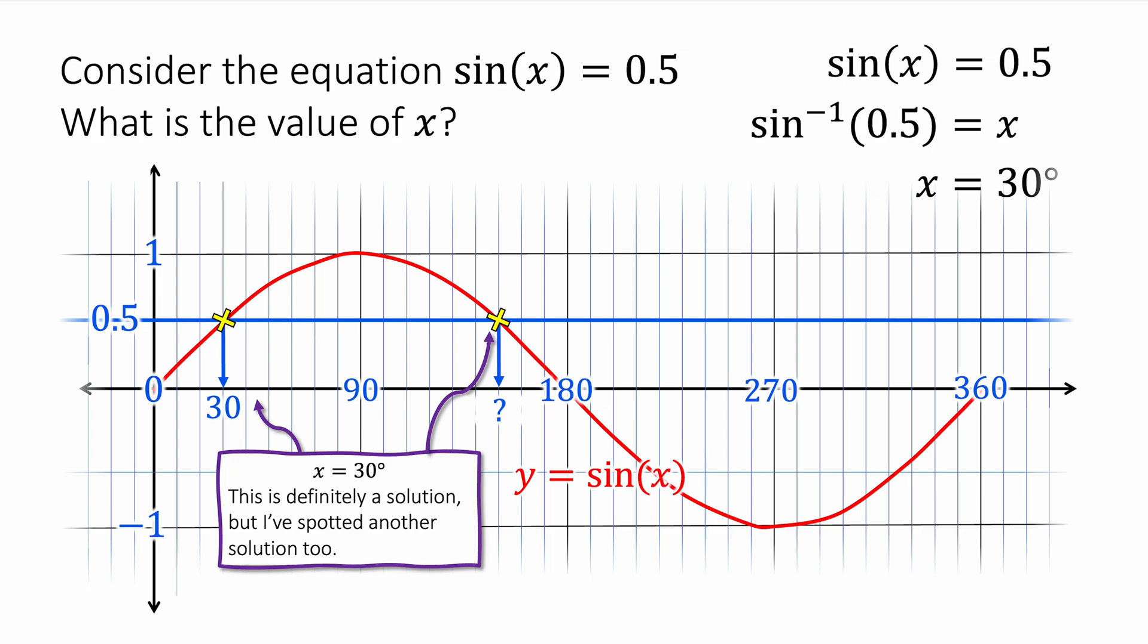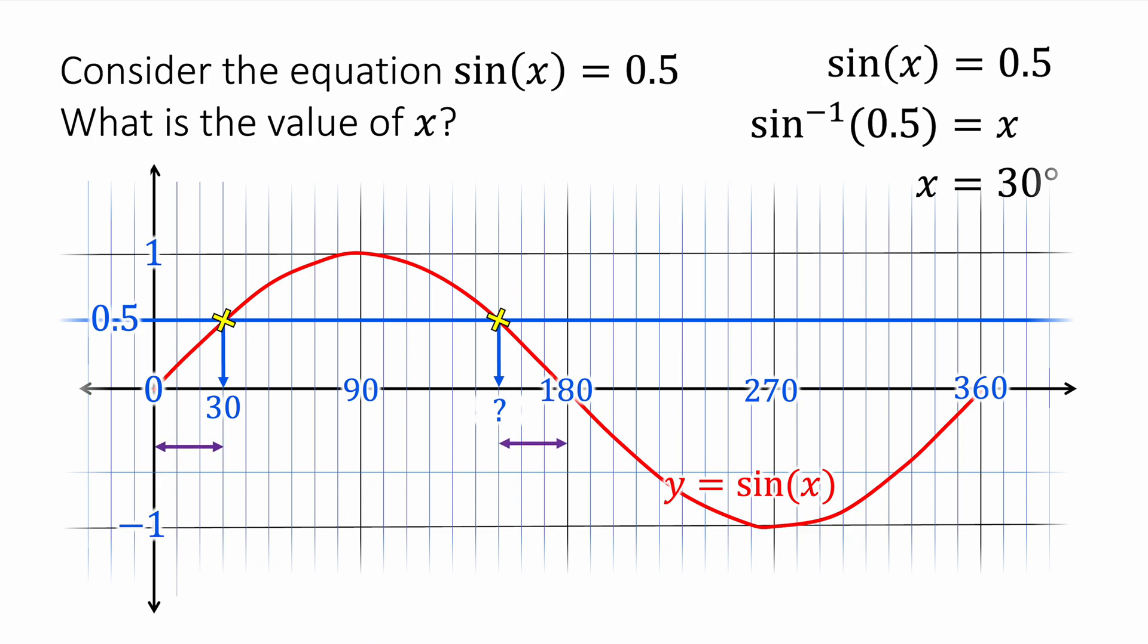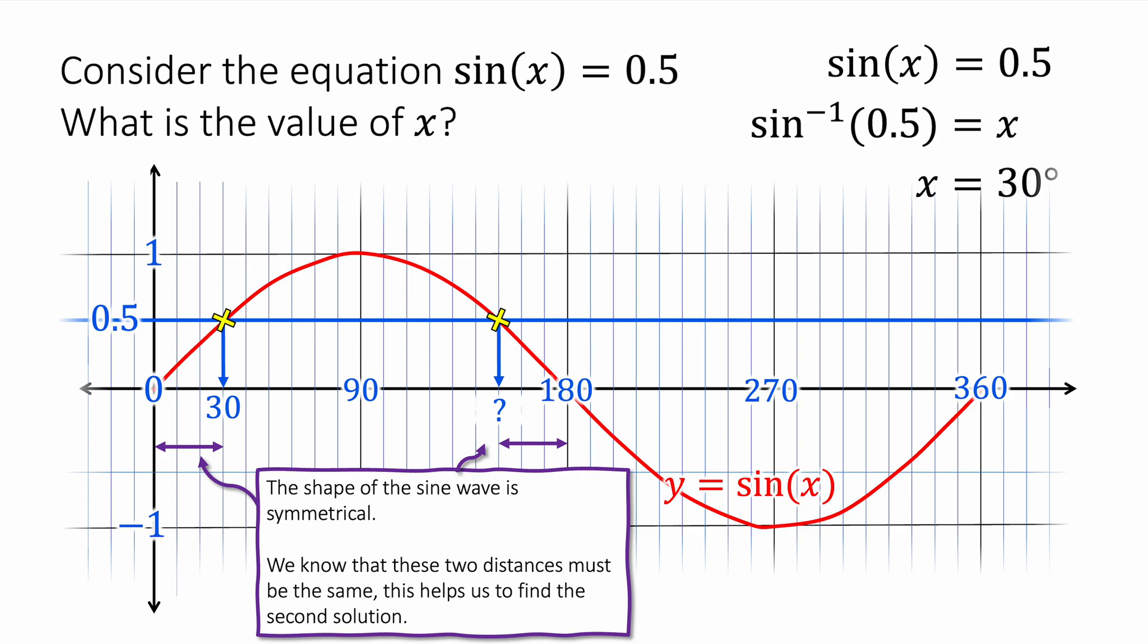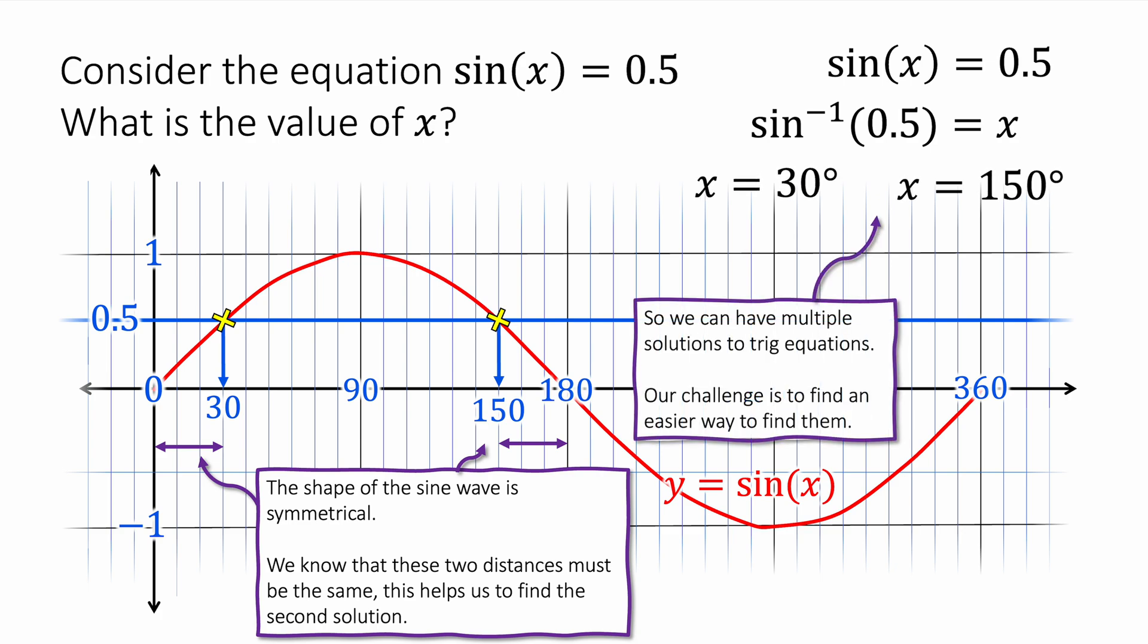There is another solution here where the sin graph also crosses the line 0.5. And so we're trying to find that solution. What I can see is that there's some symmetry here across the hump of the sin graph. The distance from 0 to 30 is going to be the same as the distance between the question mark and 180 degrees because the sin graph is symmetrical. So I can do 180 minus 30 and get 150 degrees. There's a quicker way to find these repeated solutions, and that's what CAST diagrams are for.